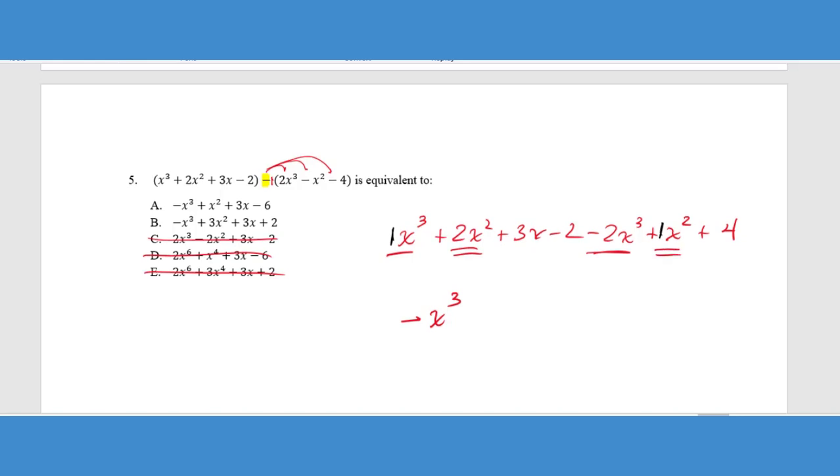So again, we have an understood 1 here. And if we look at that, we have positive 2 and a positive 1 that gives us 3X squared. And if I go look at my answer choices that are remaining, B is the only answer choice that has 3X squared in it. So I don't even really need to do the rest of this.